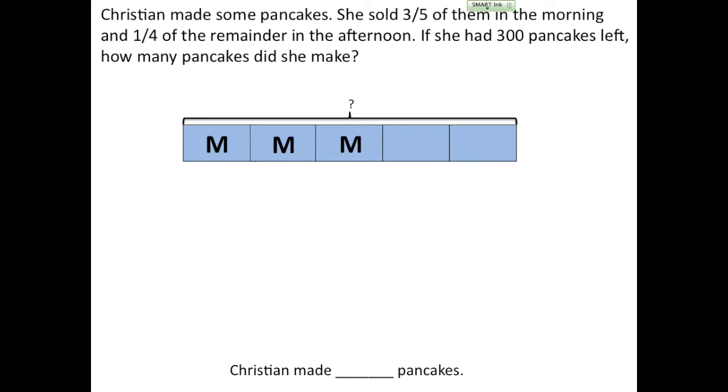So I'm going to label three of these units M for morning and one-fourth of the remainder in the afternoon. So I'm going to draw an arrow coming down from my remainder and I'm going to draw just what's left after she sells three-fifths of them in the morning. I'll split this bar up into four parts because I know that she sells one-fourth of the remainder in the afternoon.